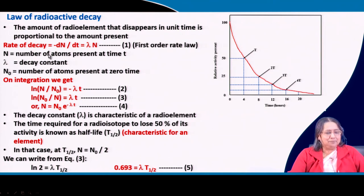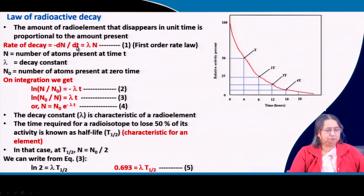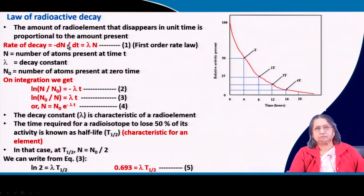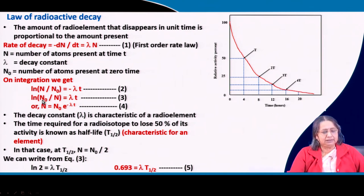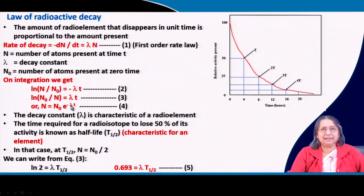N is the number of atoms present at that time and N₀ is the number of atoms present at time zero. Upon integration — the same way as done for first-order reactions — we get: ln(N/N₀) = −λt, or equivalently ln(N₀/N) = λt, and therefore N = N₀·e^(−λt). This gives the exponential decay curve, where activity decreases exponentially with time.